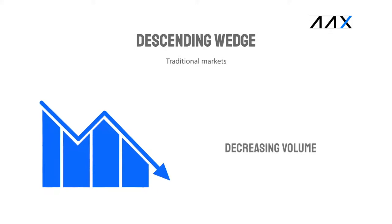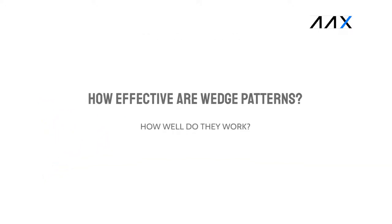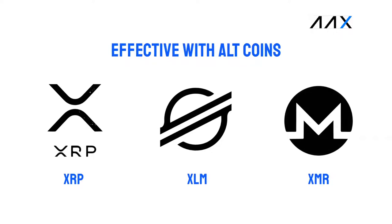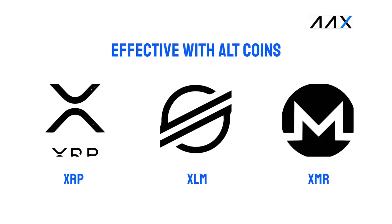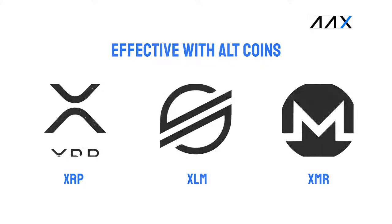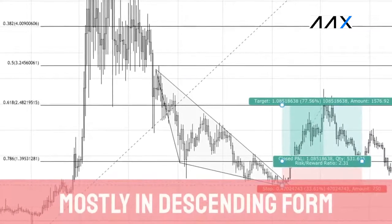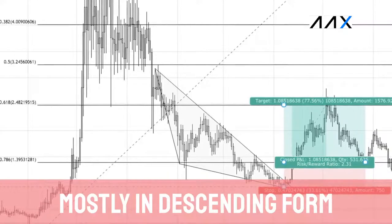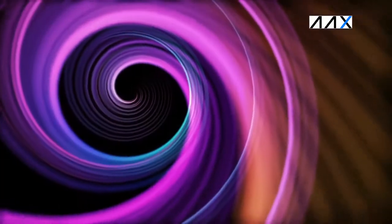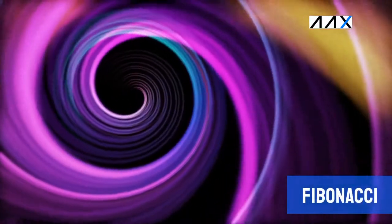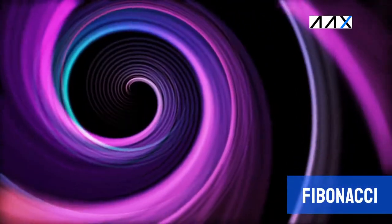Like rising wedge patterns, descending wedge patterns are also used with volume in traditional markets. How effective are wedge patterns, and how well do they work in practice? From personal trading experience, wedge patterns are much more effective and reliable with altcoins. Technical patterns with Bitcoin are often unreliable, whereas with many altcoins, they continue to work. Most altcoins have suffered heavily since their all-time highs in 2018, and many have seen wedge patterns, most of which are in the descending form. With wedge patterns being used alongside Fibonacci retracements, it has allowed traders to gain from the pullback before the next drop, or to set up a short.